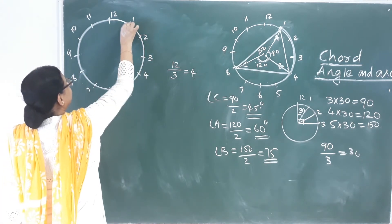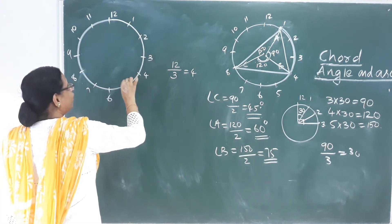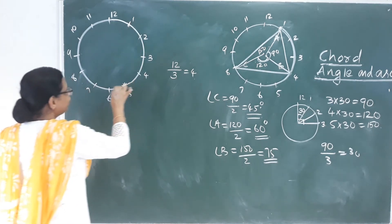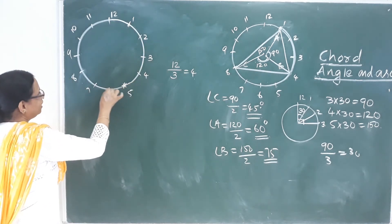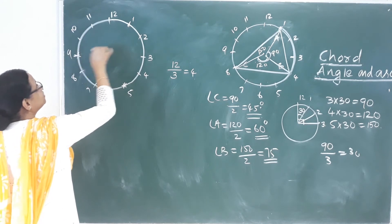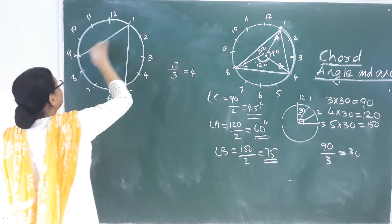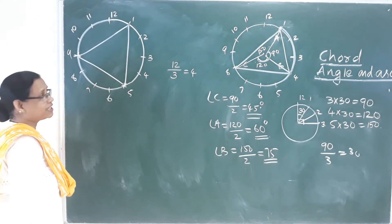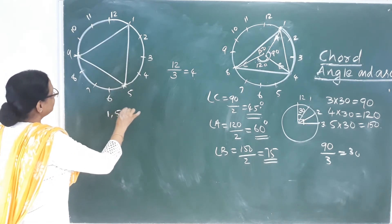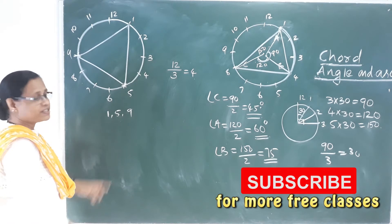Starting from 1: joining 1, 2, 3, 4 with equal spacing — that gives us 1, 5, 9. This is the first equilateral triangle.